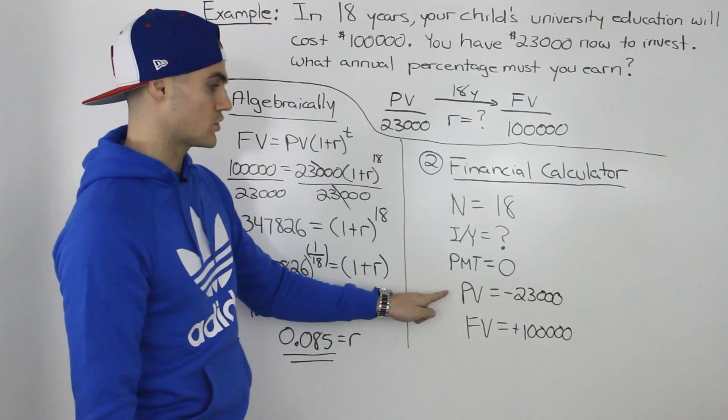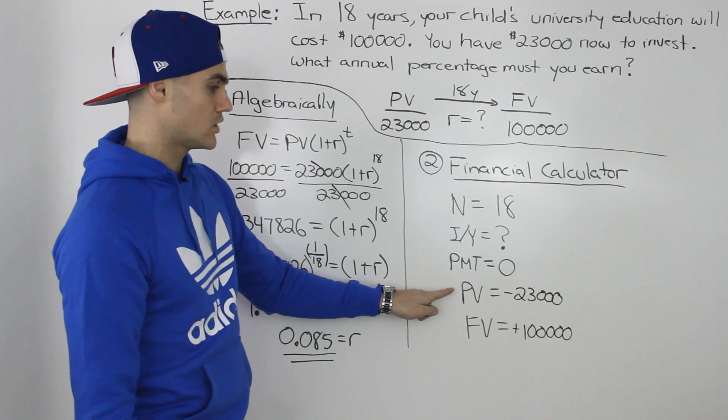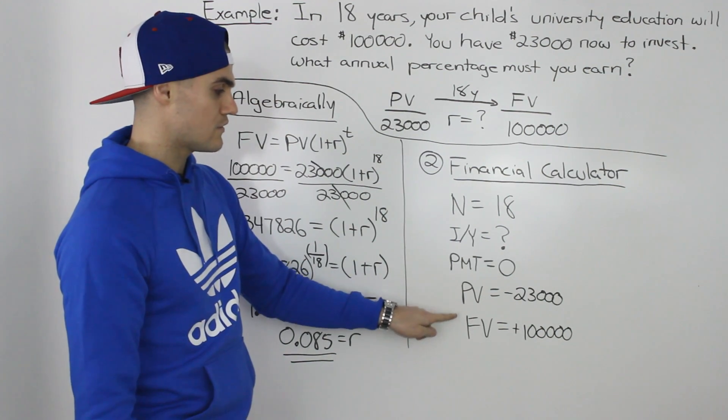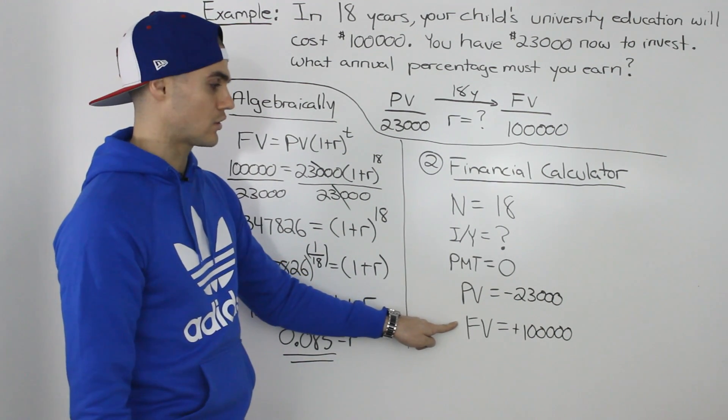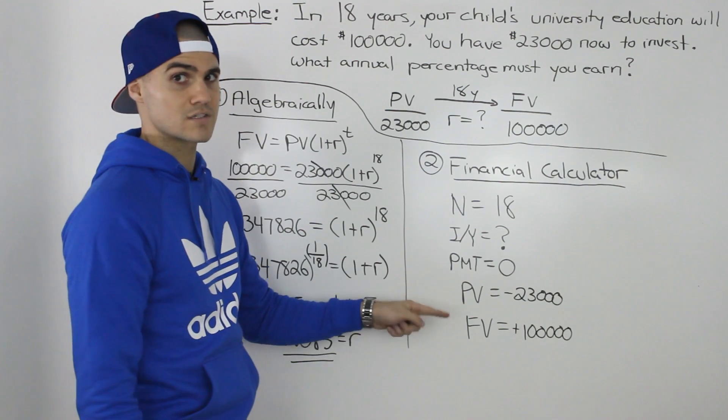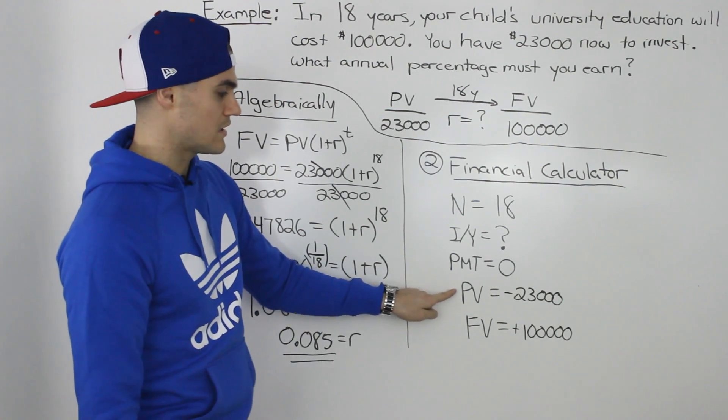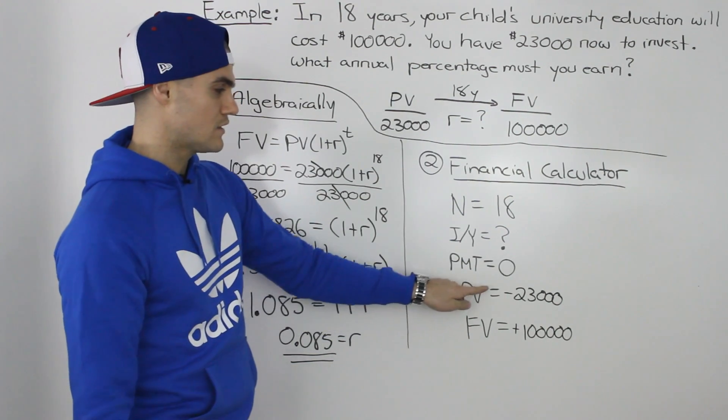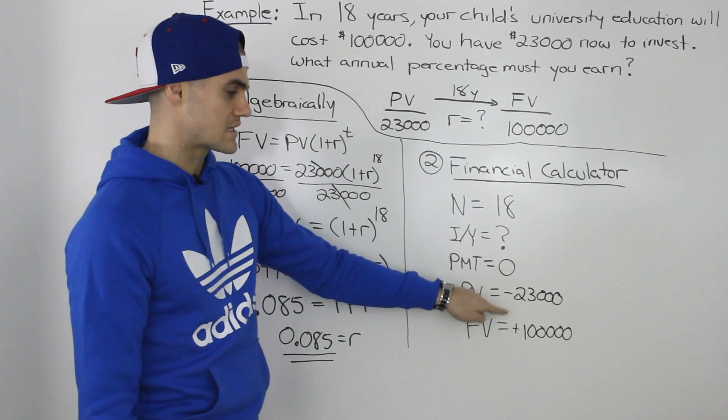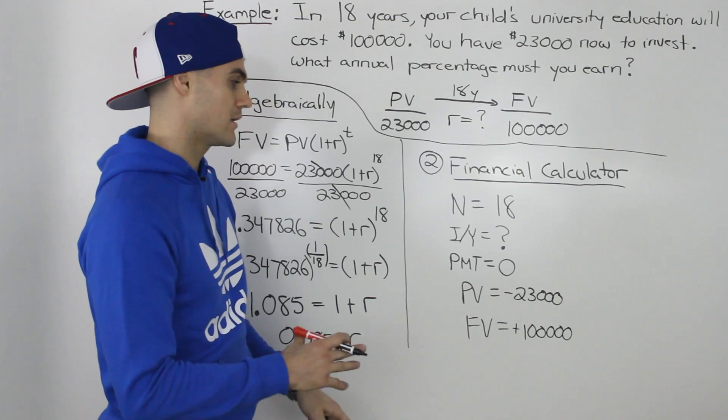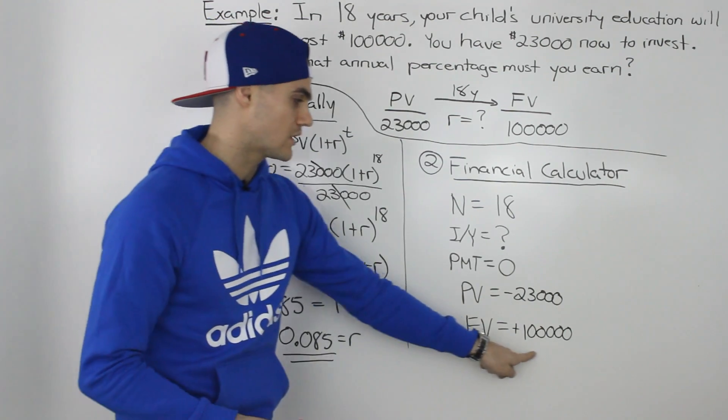It's really crucial that when you're inputting both the PV and FV numbers in your calculator, you get the positives and negatives right. When solving for either PV or FV, even if you screw up the signs, it's bad but at least you'll get the right number. However, in this case, because we have to input both PV and FV, you must get those positives and negatives correctly.